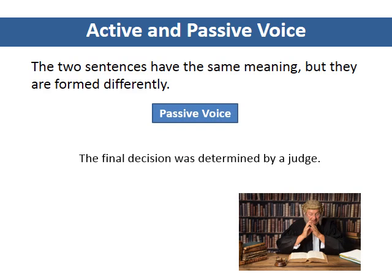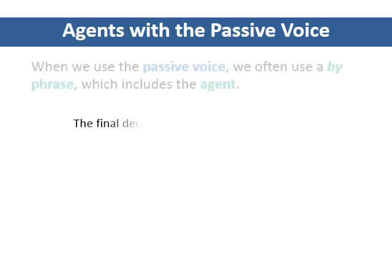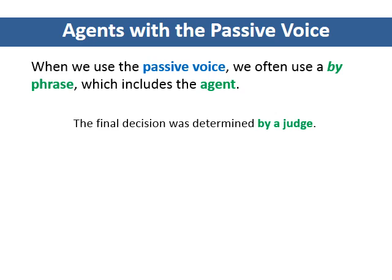The other sentence uses the passive voice to express the same idea. When we use the passive voice, the subject of the sentence is the receiver of the action. The receiver is the person or thing that is affected by the action of the verb. Notice that in a passive sentence, the agent comes after the verb. When we use the passive voice, we often use a by-phrase, which includes the agent.